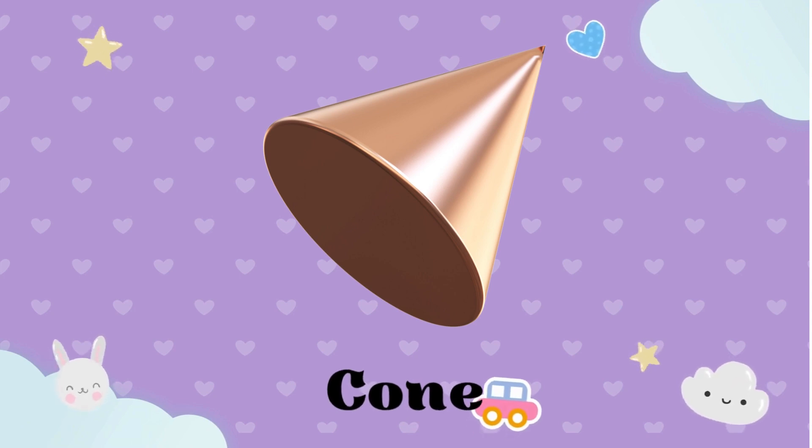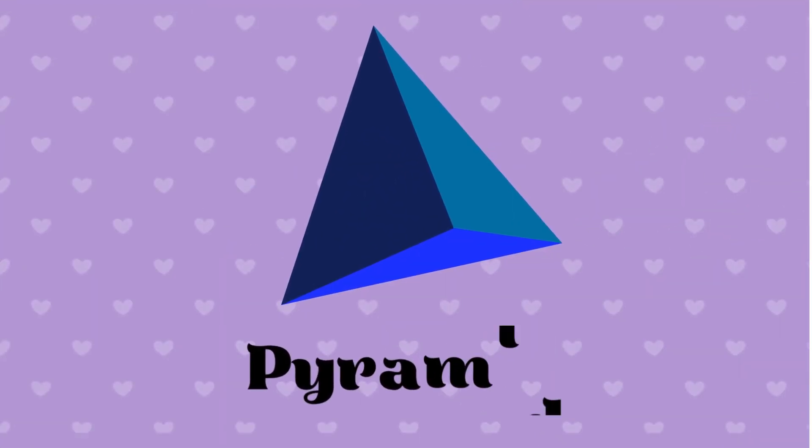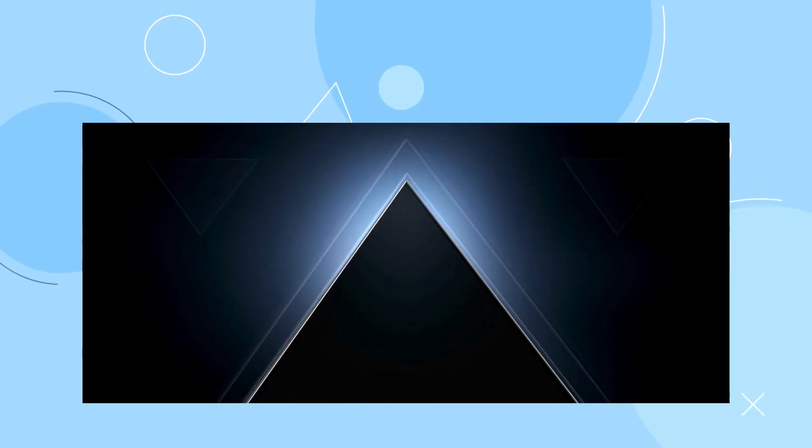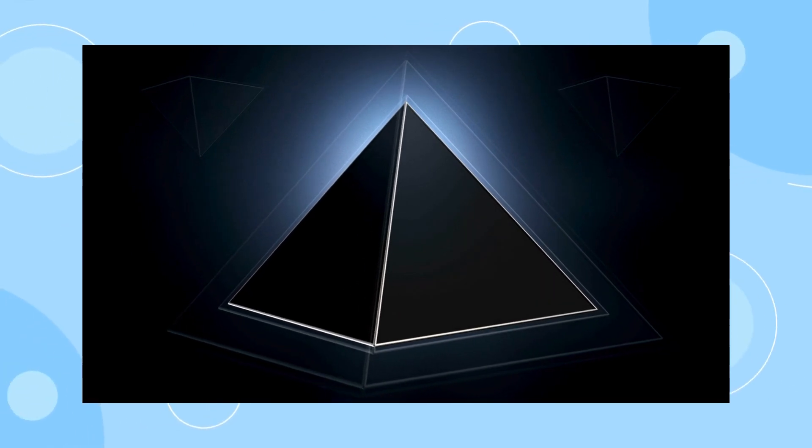Cone - a shape with a circular base and a pointed top. Pyramid - a shape with a polygonal base and triangular sides that meet at a common apex.